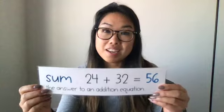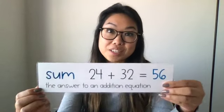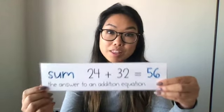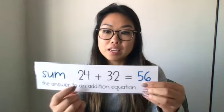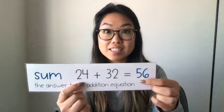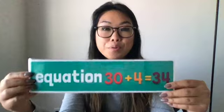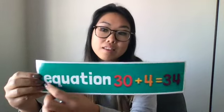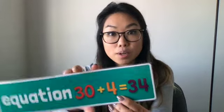We're going to think about the word sum. A sum is the answer to an addition equation. You can see in this example there are two addends that equal a sum. When we have equations, we have the addends if we're adding, and then we have the sum, with an operation in the middle and the equal sign — and that's what makes an equation.